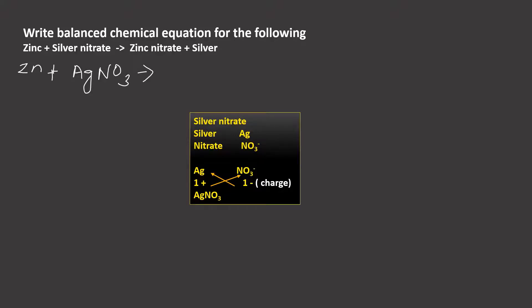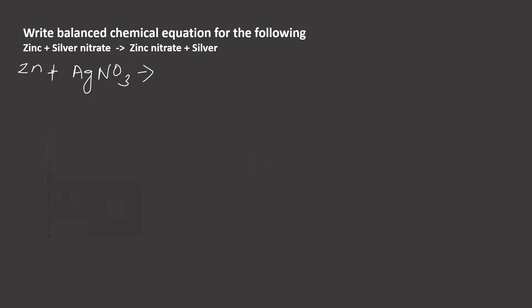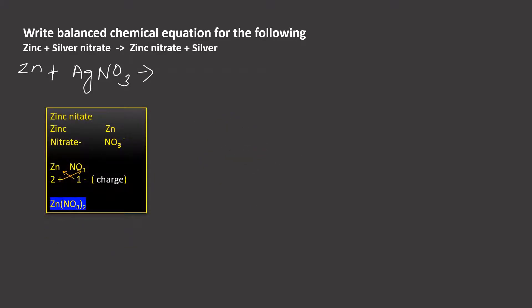That gives zinc nitrate. What is the formula of zinc nitrate? Zinc and nitrate ions are attached together. When the charge is criss-crossed, we get the formula of zinc nitrate Zn(NO3)2. Okay, plus silver Ag.